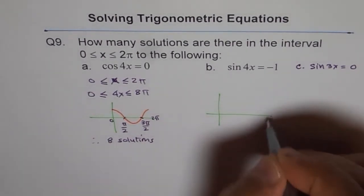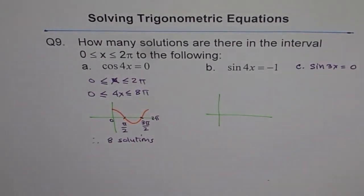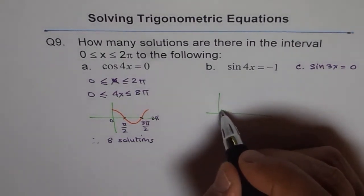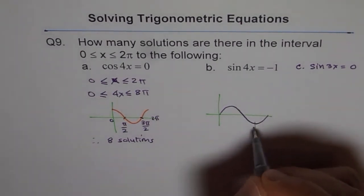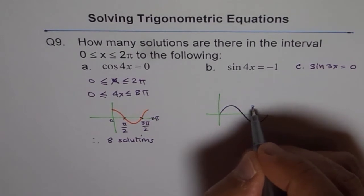Similar is the case for the sin 4x function. So if you see this function, how will you sketch it? So sin function is kind of like this, it's like this. And it is minus 1 at 1 value, correct? So it is minus 1 at 3π by 2.